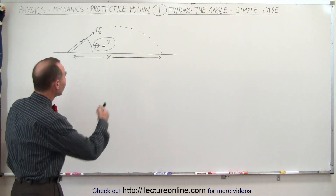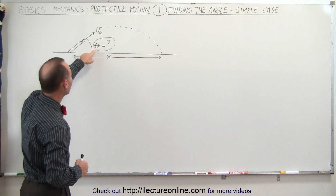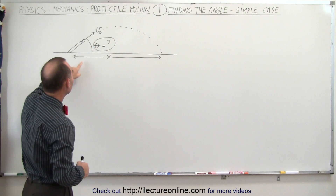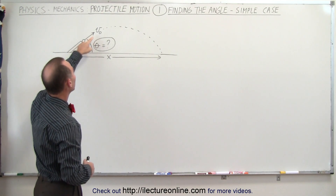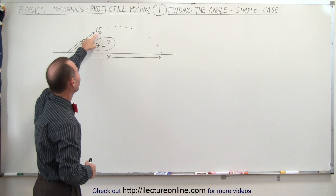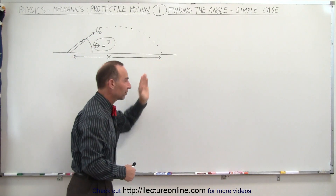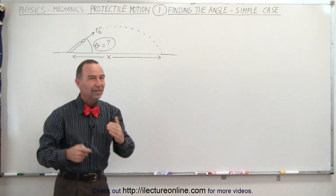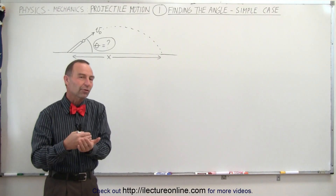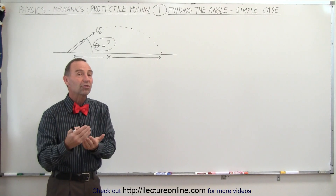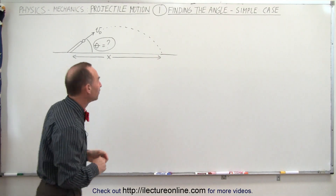Let's start with the case where we're trying to find the angle required such that if a projectile is fired with an initial velocity of v sub naught it will reach a distance of x. This is simply going to be the general case — we're going to develop the equation and then afterwards show you an example.